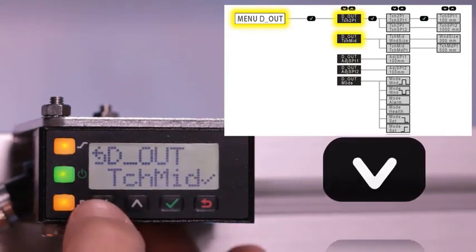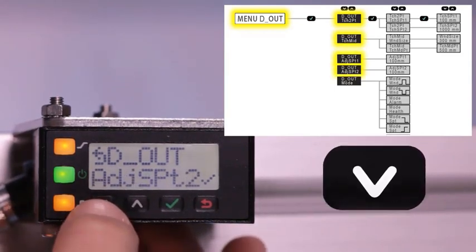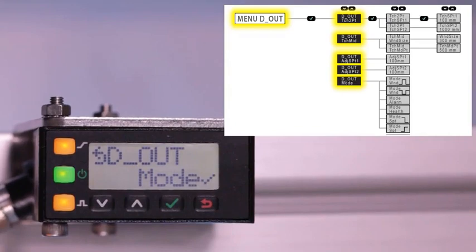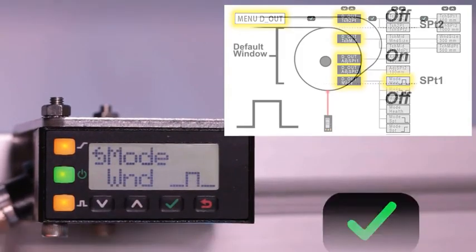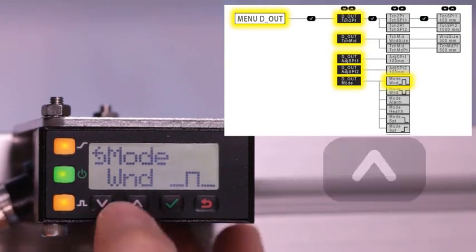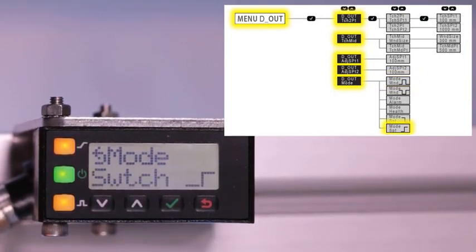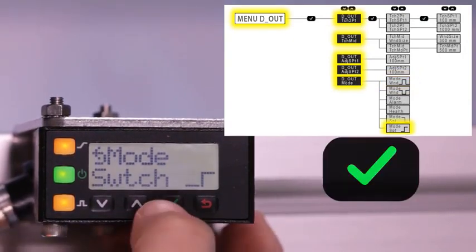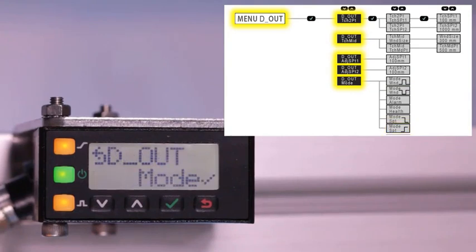Click down to cycle through the other options until getting to mode. Click enter to access the mode options. The default discrete output setting is a normally closed window where the output is on when a target is located between the two switch points. Click up to cycle through the different mode options until getting to the normally open switch point option and click enter to save this setting.